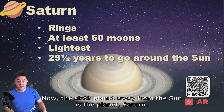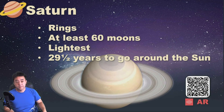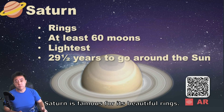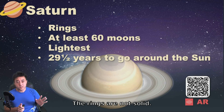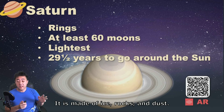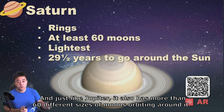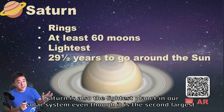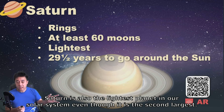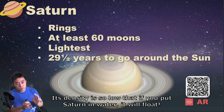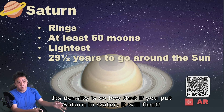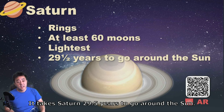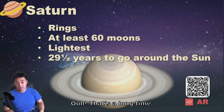The sixth planet away from the sun is Saturn. Saturn is famous for its beautiful rings. The rings are not solid — they're made of ice, rock, and dust. And just like Jupiter, Saturn also has more than 60 different-sized moons orbiting around it. Saturn is also the lightest planet in our solar system, even though it's the second largest. Its density is so low that if you put Saturn in water, it would actually float. It takes Saturn 29 and a half years to go around the sun. Whew, that's a long time!